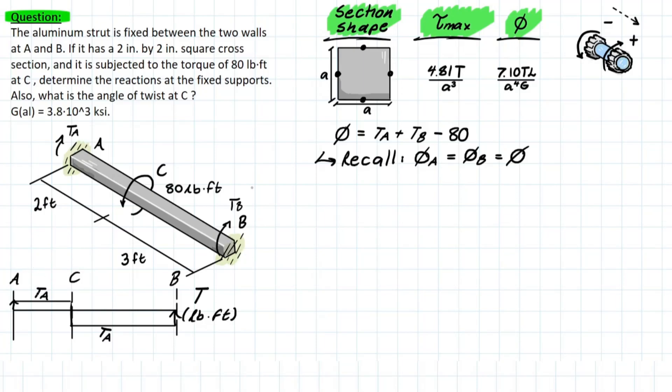So what is the equivalent torque at this location would be equal to TA. If we're working from left to right, we go TA, TA, TA, big jump with 80, which is in the negative convention. And now we have something we can work with.